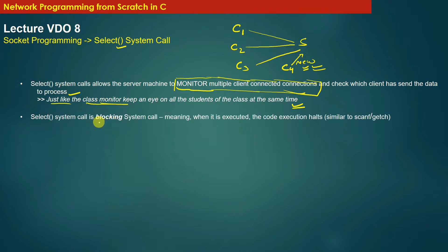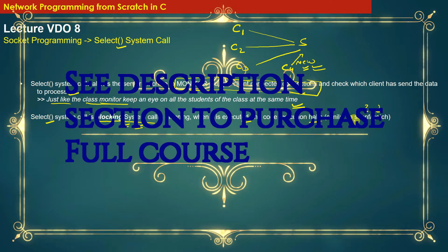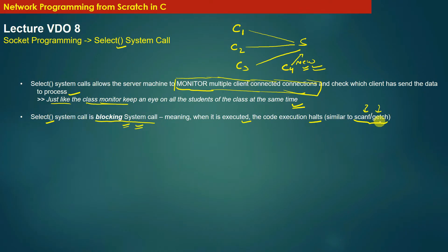Select system call is a blocking system call. The moment the server calls select, the execution gets blocked — meaning code execution halts. For example, just as functions like scanf or getch in your programs halt execution until input is received, the select system call similarly blocks the execution of a program. Such calls are called blocking system calls, and select is one such blocking system call.